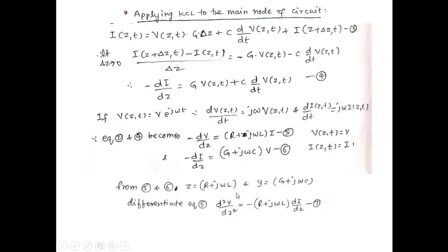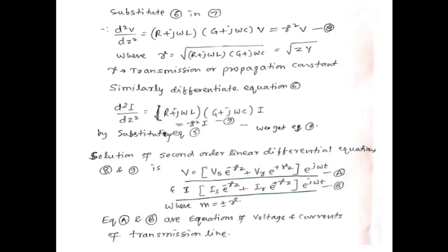Differentiating equation 5 and substituting equation 6, we get d²V/dZ² = (R + jωL)(G + jωC)·V = γ²V, where γ = √[(R + jωL)(G + jωC)] is the transmission or propagation constant. Similarly, differentiating equation 6 and substituting gives d²I/dZ² = γ²I.